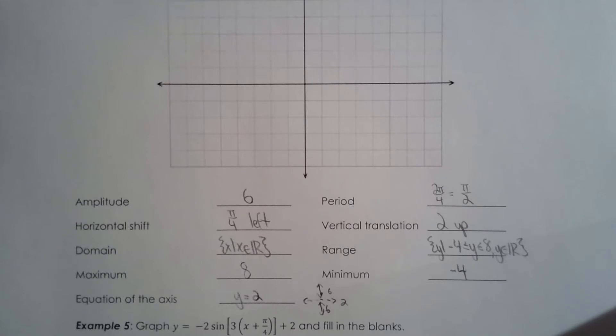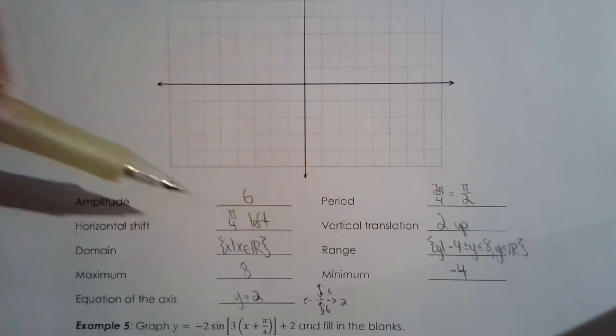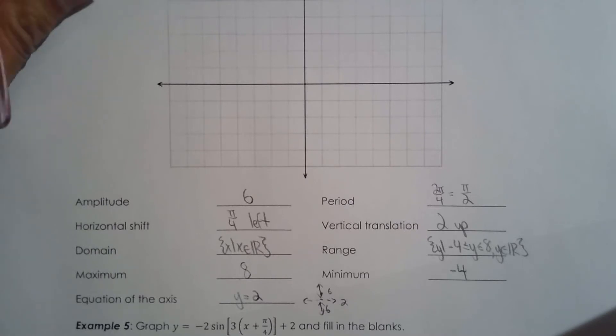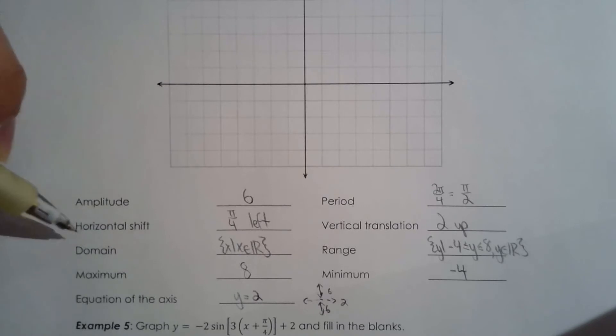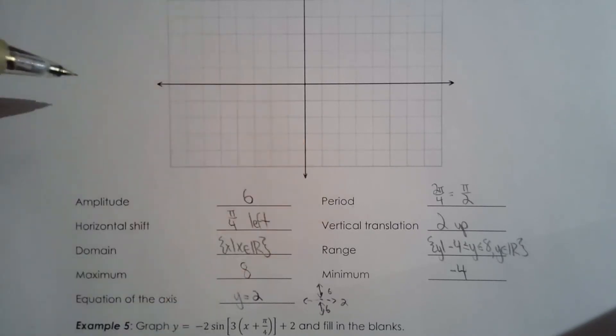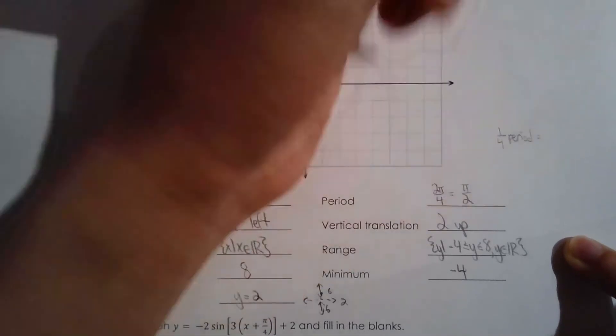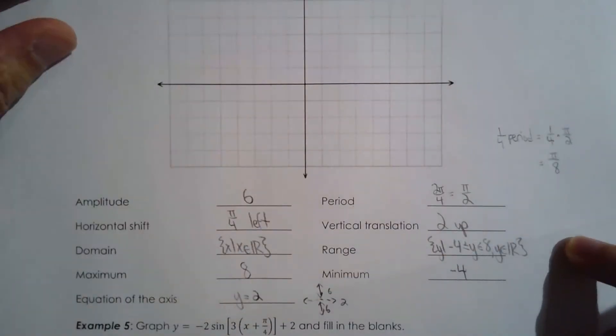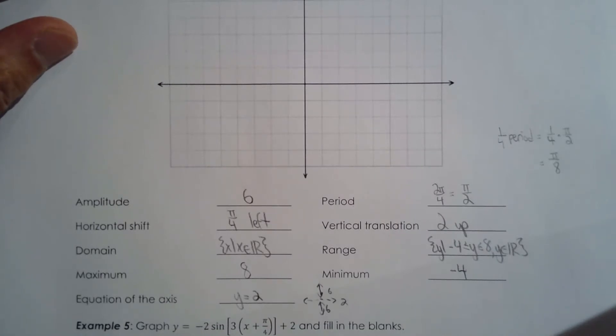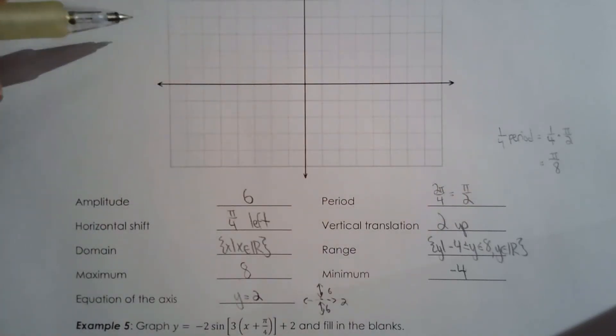Now let's put everything together. We've shifted pi over four to the left and have a period of pi over two. Before moving on, I want to find a quarter of the period. One quarter period equals one quarter times pi over two, which gives pi over eight. All I need to graph this wave is five points.